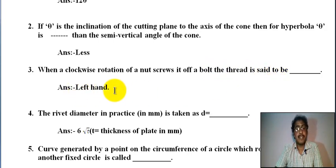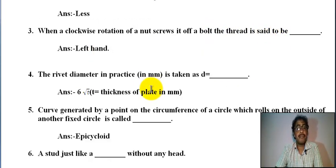Number four: the rivet diameter in practice in millimeter is taken as d equal to 6 root t. It is Unwin's formula d equal to 6 root t, here t and d both are in millimeter.